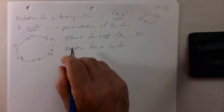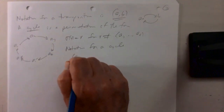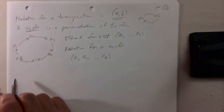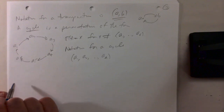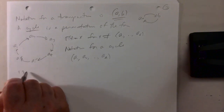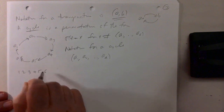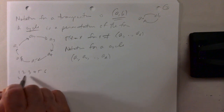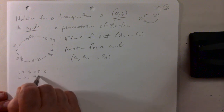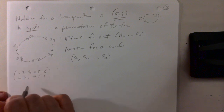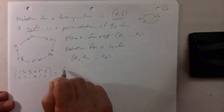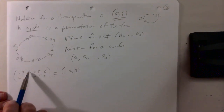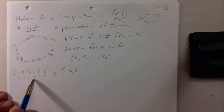The notation for a cycle just extends the notation for a transposition — a transposition is a cycle of length 2. A cycle of length l is written (a1, a2, ..., a_l). For example, in S6: 1 goes to 2, 2 goes to 3, 3 goes to 1, and 4, 5, 6 are all fixed. This is the cycle (1, 2, 3): one goes to two, two goes to three, three goes to one, everything else is fixed.